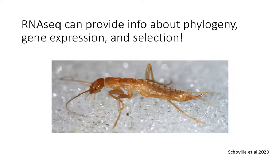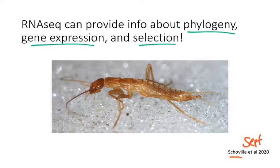To wrap up this video, here's a recent example hot off the press — a paper that just came out in September from someone who was a postdoc in the same lab. It's a nice example integrating several things we've discussed this semester: how RNA sequencing can give information about phylogeny, gene expression, and selection. This paper focuses on a group of insects called ice crawlers, which are found in snow fields and prefer temperatures close to zero degrees Celsius, found in parts of Western North America and Eastern Asia.